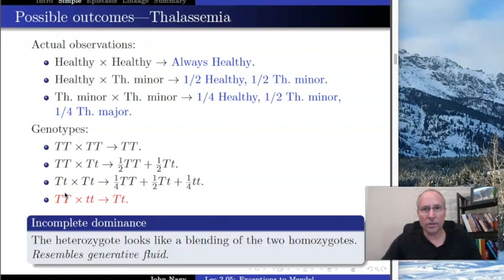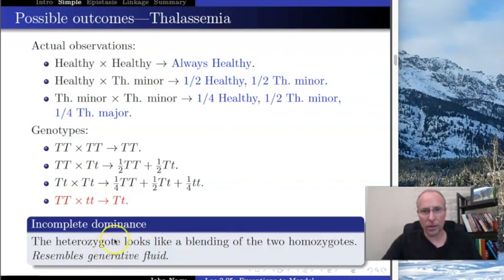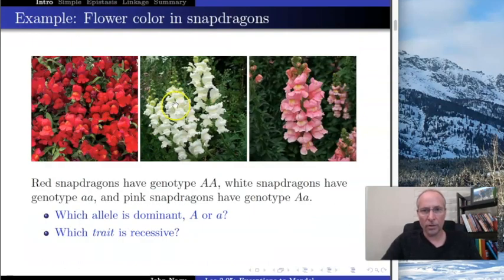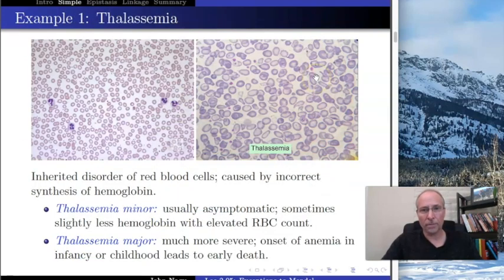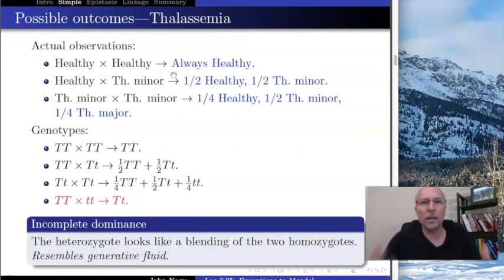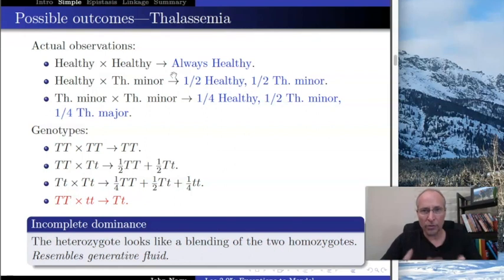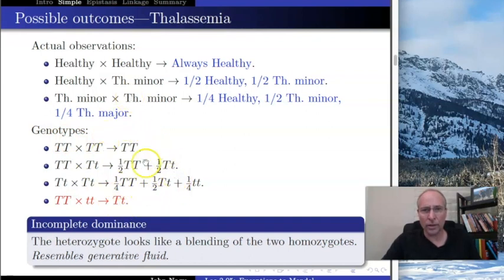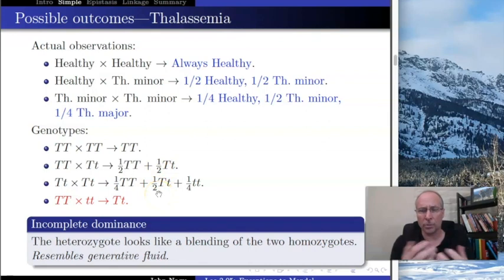What we're seeing here — both in snapdragons and in thalassemia — is blending. A healthy individual has a child with a sick individual, and the offspring are kind of sick. Red crossed with white gives pink. This pattern is far more common than Mendelian inheritance — so common it's one reason Mendel had such trouble getting people to believe him. Whenever you see blending inheritance like this, we call it incomplete dominance. It's incomplete in the sense that neither allele — big T or little t — is completely expressed in the heterozygote. The heterozygote is partially sick and partially healthy; that's the blending, and that's incomplete dominance.